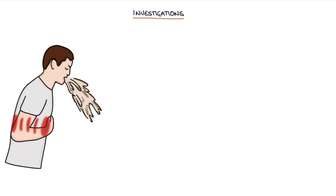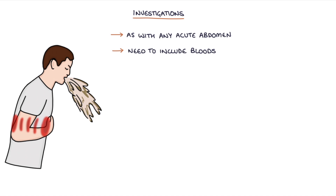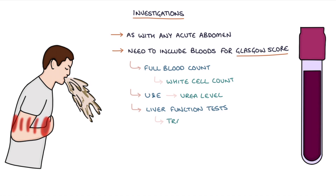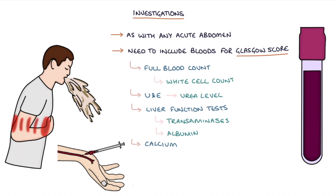Let's talk about the investigations. Initial investigations are required as with any presentation of an acute abdomen. Importantly, these investigations need to include the blood tests required for calculating the Glasgow score, which we'll talk about shortly. A full blood count is required for the white cell count, urea and electrolytes for the urea level, liver function tests for the transaminases and albumin level, a blood calcium, and an arterial blood gas or ABG for the PaO2 and blood glucose level.